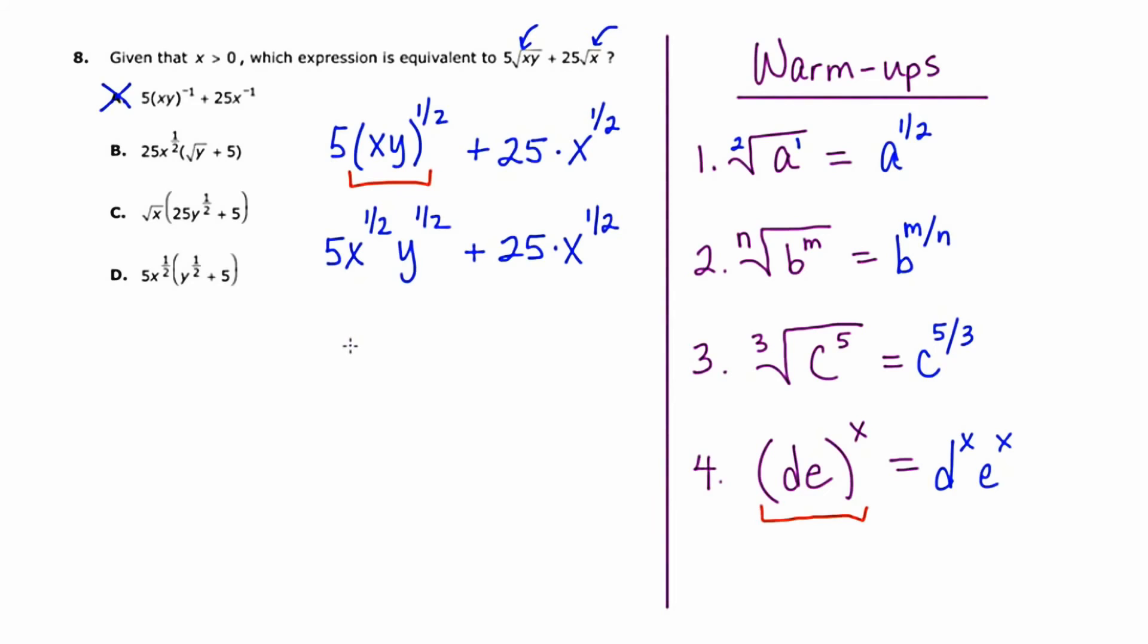Now, what I can do just to go further with this, and hopefully get it to look like one of my answer choices, is implement a factoring technique, GCF. Now, GCF stands for greatest common factor. And there is something that I could take out from both of these terms, I could take out a five x to the one half, because that's in both of these terms. So I'm going to take out five x to the one half.